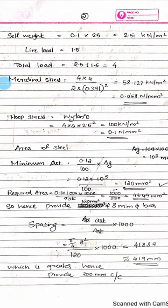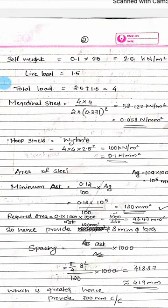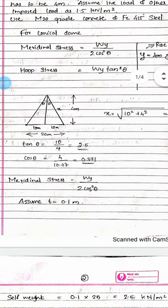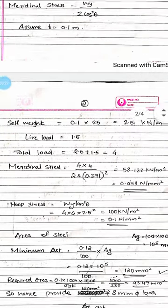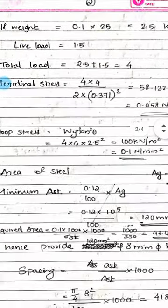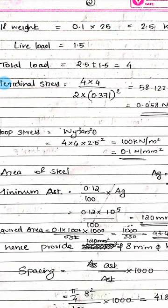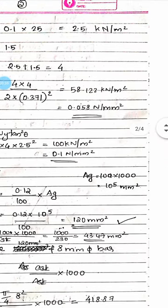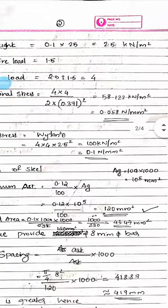Now we calculate the meridional stress using W·Y divided by 2·cos²θ. Cos θ equals 4 divided by 10.77, giving cos²θ = 0.371. The meridional stress equals 4 divided by (2 × 0.37²), which gives 58.122 kN per meter square, approximately 0.058 kN/mm².